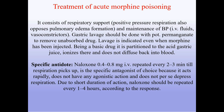Treatment of acute morphine poisoning: respiratory support (positive pressure respiration also opposes pulmonary edema), maintenance of blood pressure with IV fluids and vasoconstrictors. Gastric lavage should be done with potassium permanganate to remove unabsorbed drug; lavage is indicated even when morphine has been injected, as being a basic drug it partitions to acid gastric juice and doesn't diffuse back. Specific antidote: naloxone 0.4–0.8 mg intravenously, repeated every 2–3 minutes until respiration picks up. It acts rapidly, has no agonistic action, and does not depress respiration. Due to its short duration of action, naloxone should be repeated every 1–4 hours according to response.